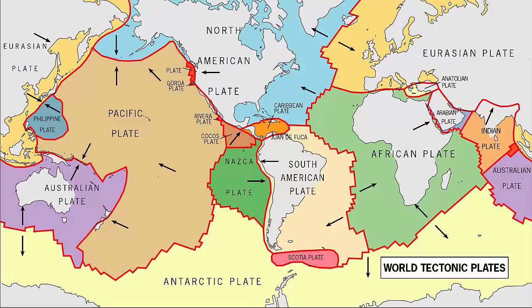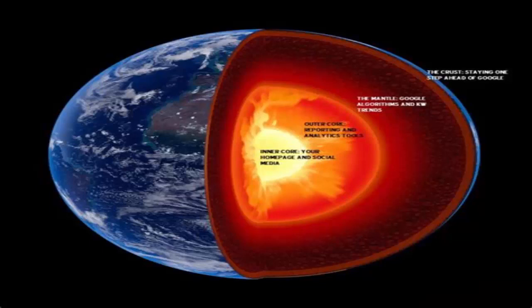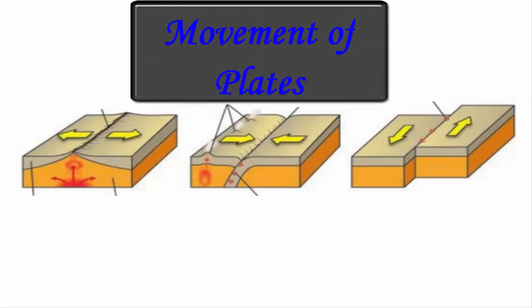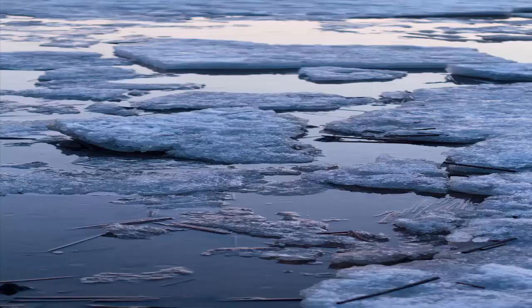The earth's outer layer is made of large moving pieces of plates. All of the earth's land and water sit on these plates. These plates are made up of solid rocks. Under these plates is a weaker layer of partially melted rocks. The plates are constantly moving over this weaker layer, rather like icebergs.